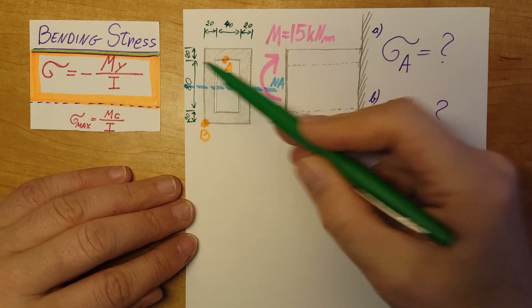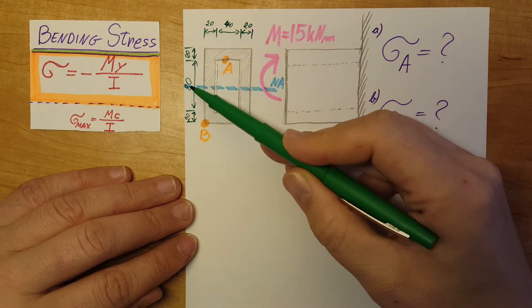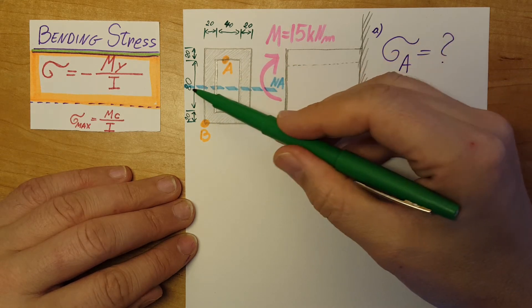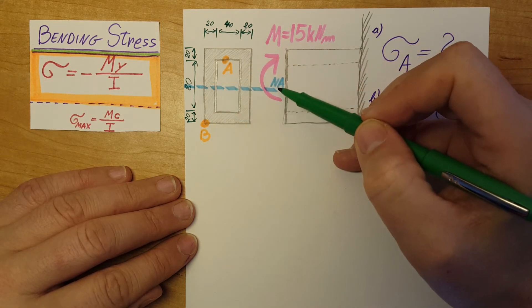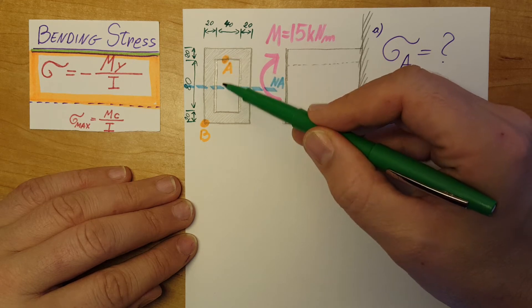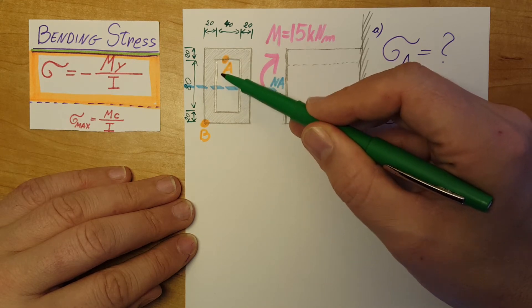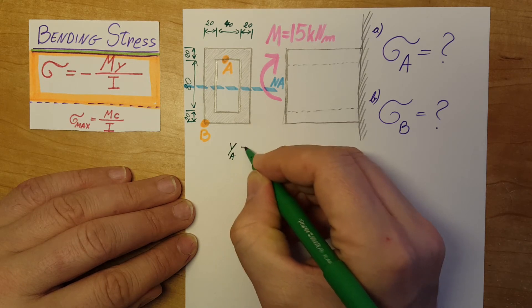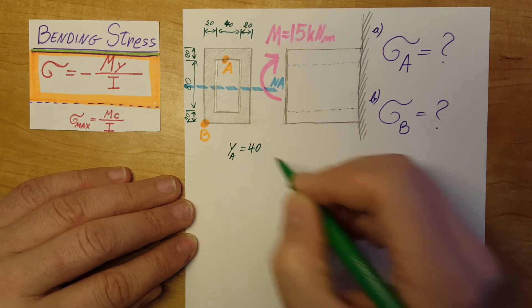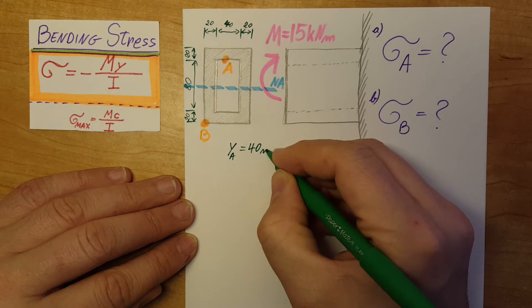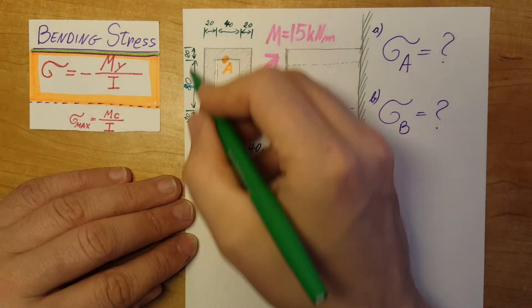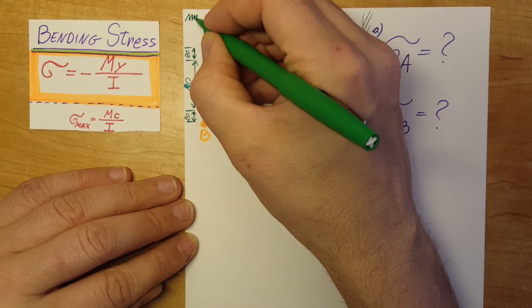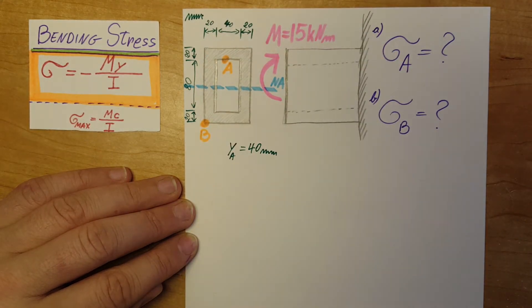Since this whole length of the interior is 80, therefore, since the neutral axis goes through the center, we know that this length will be 40, half of it. So my Y for point A will be 40 millimeters. All these are millimeters. I should write it over here. So there you go, we found Y for A.